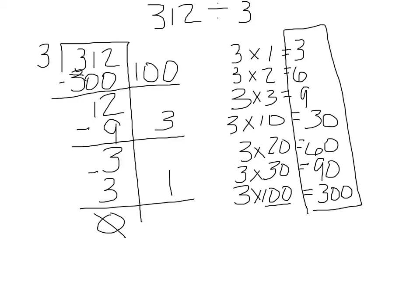The answer is found by adding the numbers on the side together. Some kids can do this in their head, sometimes they can't — that's okay. In this case most of them probably can, because we just have 100 plus 3 plus 1, which is 104.